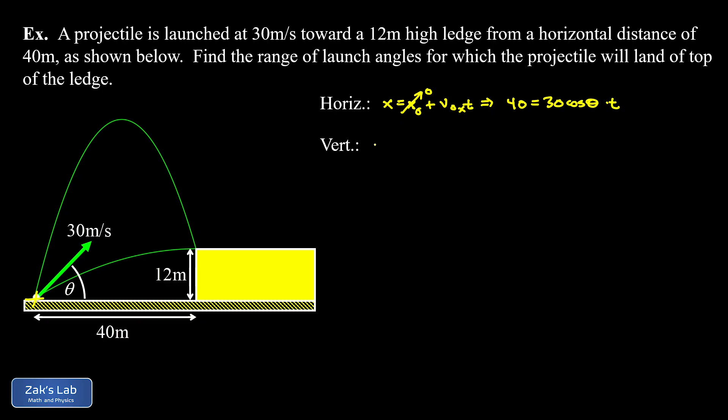Then we look at the vertical analysis. In the vertical direction, we have our standard Y = Y₀ + V₀ᵧt - ½gt². Our final Y position for either one of these trajectories is going to be 12 meters.